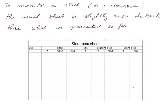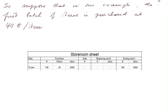Let's treat our example using the LIFO method, and we shall purchase items at two different prices. First, in our first batch of items, we purchase them at 40 euros per item on January the 12th — 100 items at 40 euros a piece, value 4,000 euros. No sales, no beginning stocks because it was the first accounting cycle. Ending stocks: 100 items for a value of 4,000 euros.